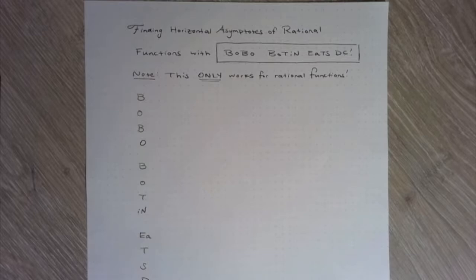And also when we talk about horizontal asymptotes, we're talking about end behavior. For those of you in calculus, this will be limits at infinity. So let's go ahead and fill out what Bobo Button stands for.